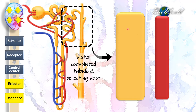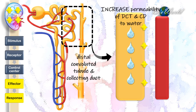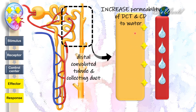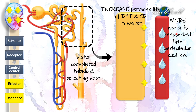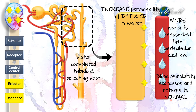The blood travelling in the peritubular capillaries has high osmolarity due to dehydration, whereas the distal convoluted tubules and collecting ducts contain water since they are producing urine. ADH binds to the cells of the distal convoluted tubules and collecting duct, making them more permeable to water. The water that was originally supposed to form urine will now diffuse out of the tubule and duct into the peritubular capillaries, so more water is reabsorbed. When this water mixes with the blood, the osmolarity of the blood decreases and returns to normal.